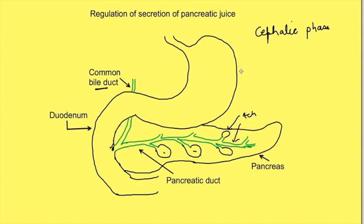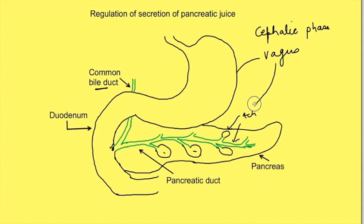When food is in the stomach, gastric distension stimulates vagovagal reflexes, where afferents of the vagus are stimulated by gastric distension and efferents of the vagus stimulate pancreatic secretion. This is the gastric phase, but these two phases do not contribute much to pancreatic secretion.